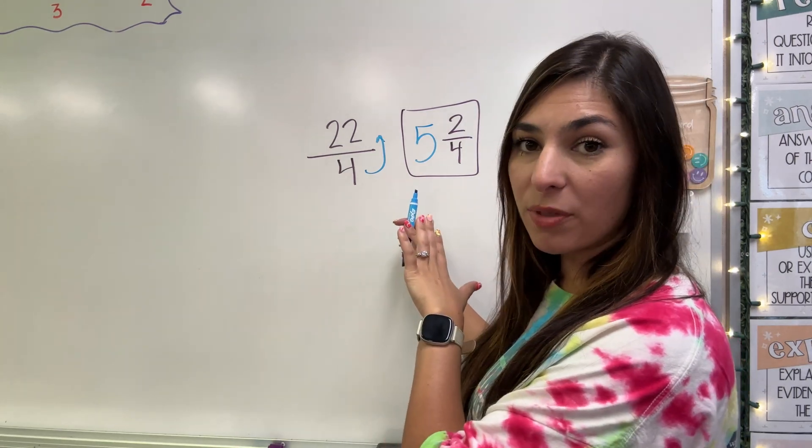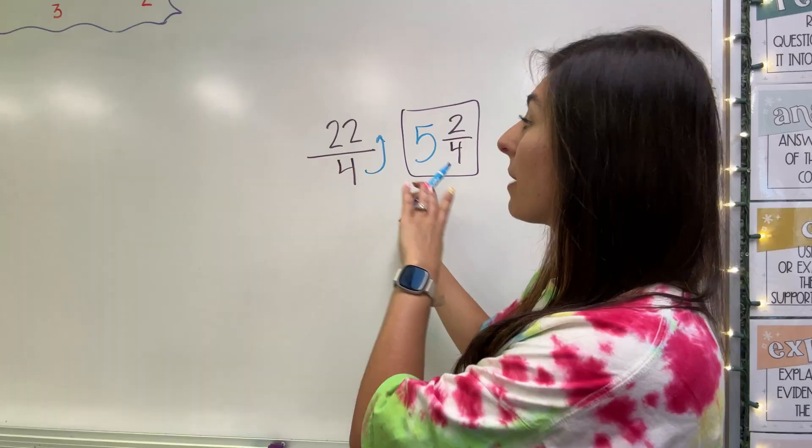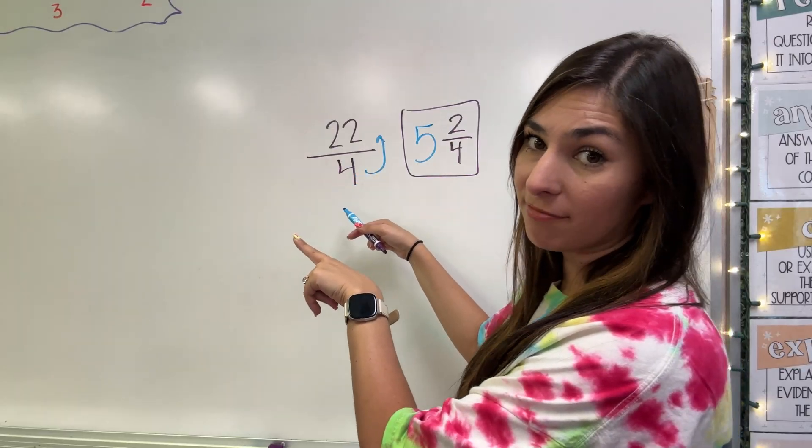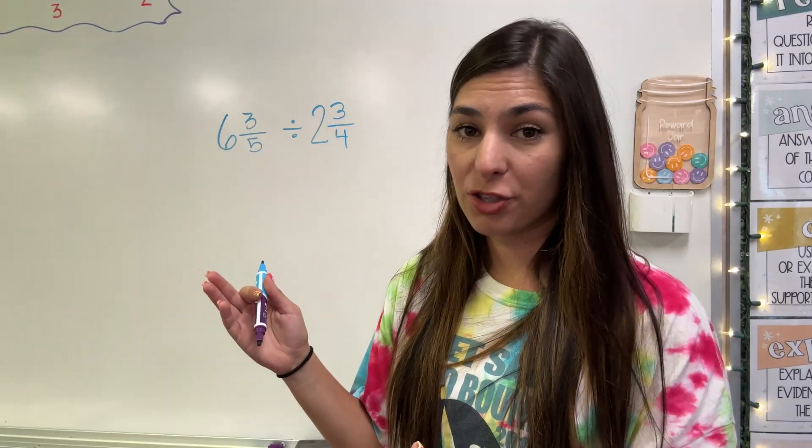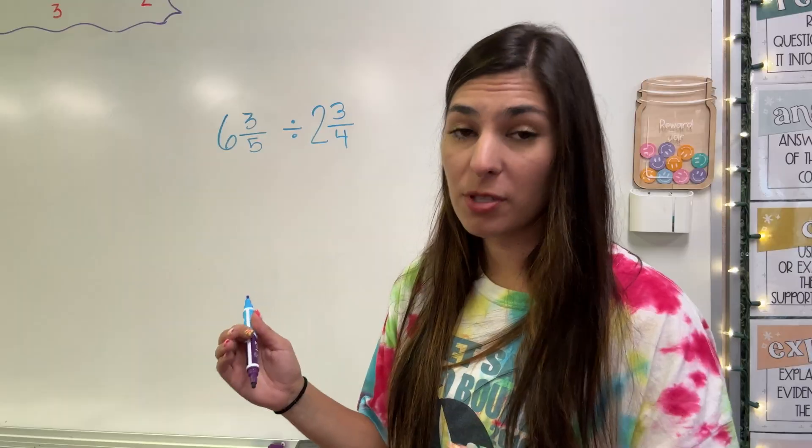So if I need to simplify, I'm turning into a mixed number. If I need to divide or multiply with another fraction, I'm going to turn that mixed number into an improper fraction. So let's do an example where we're dividing fractions.